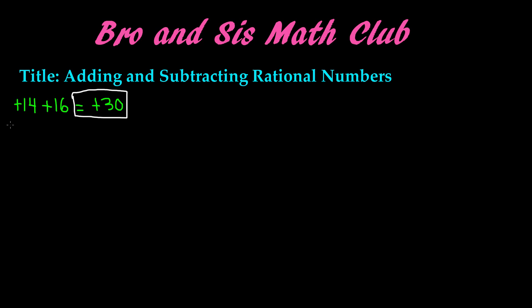Now let's do one that involves two different signs — one positive and one negative. Let's say we have 20 plus negative 4. The sign that goes with the number is to the left of that number, so this is a positive 20 and a negative 4. Whenever there are different signs, you take the sign of the bigger number in your answer. The bigger number is 20, so our answer will be positive. Then you subtract: 20 minus 4 is 16. Our answer is positive 16.